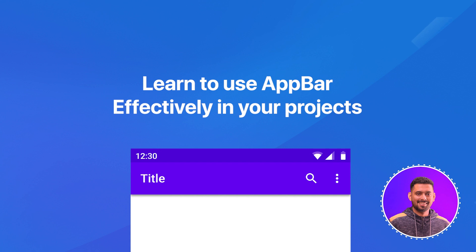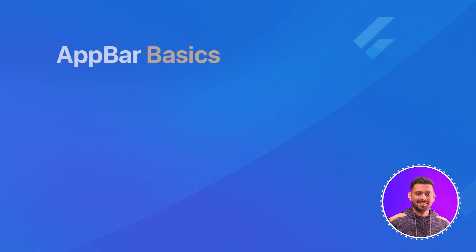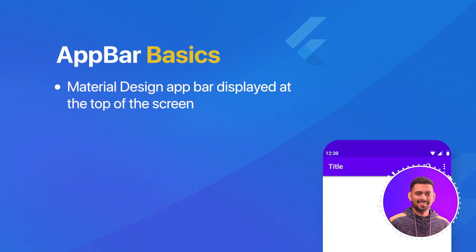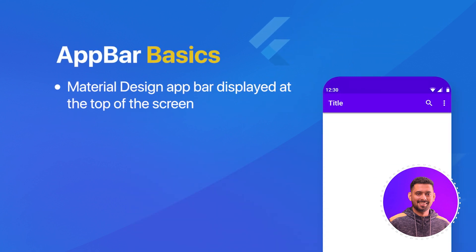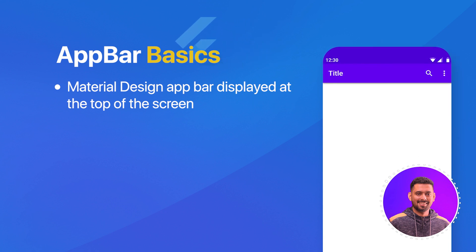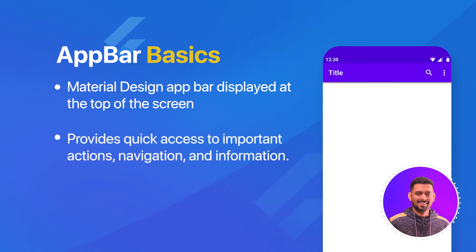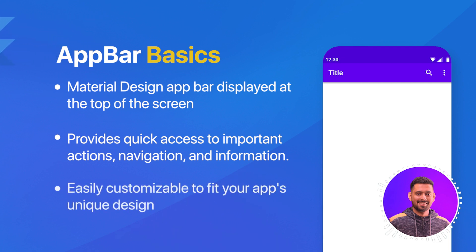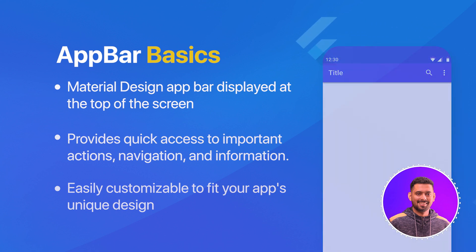So let's get started. The AppBar is a Material Design AppBar displayed at the top of the screen, providing quick access to important actions, navigation, and information. It's a versatile widget that can be easily customized to fit your app's unique design. Let's explore some key features and properties of AppBar.